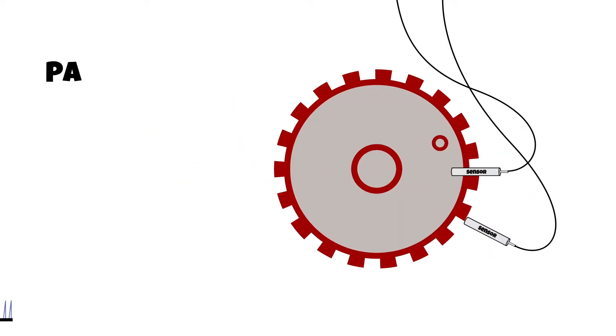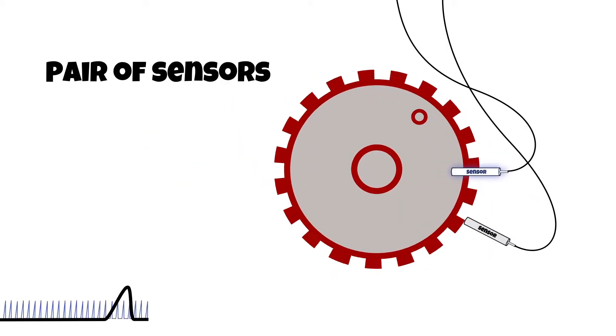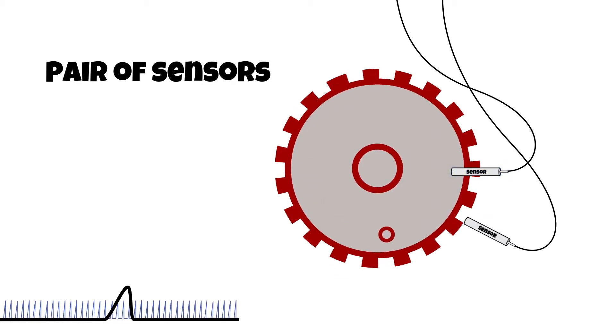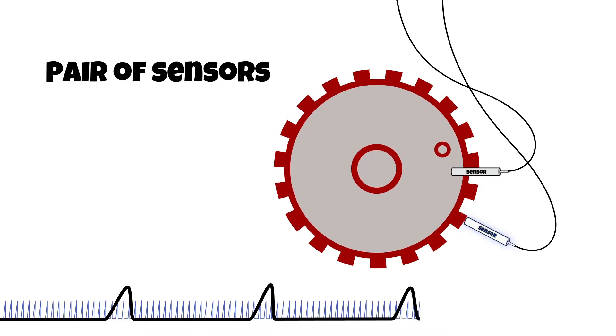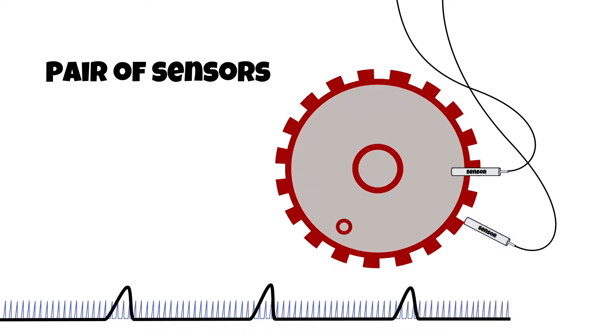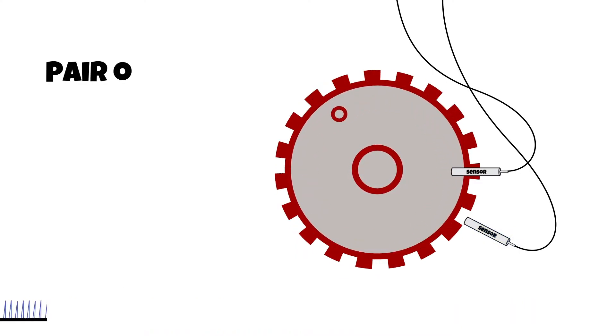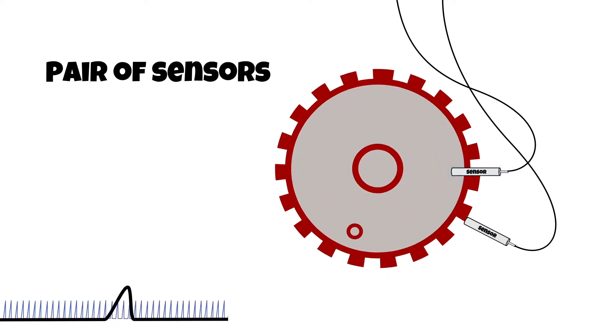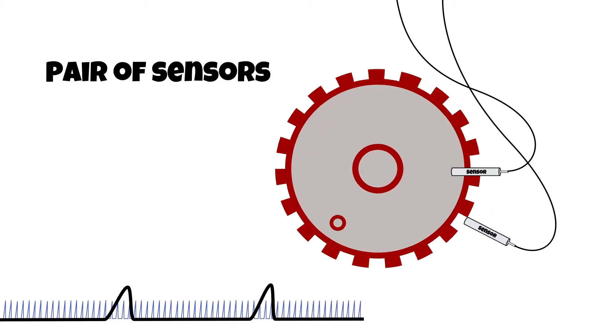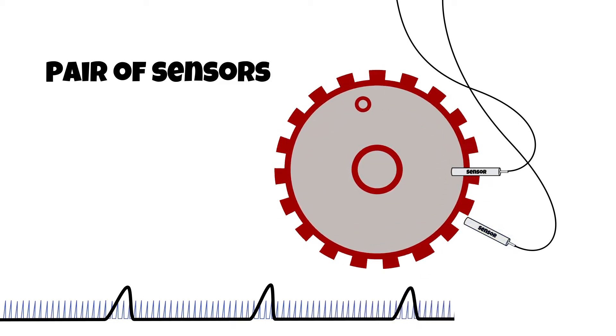One sensor is the same TDC sensor mentioned earlier, picking up one signal per revolution, while the other sensor is detecting the individual teeth from the flywheel. With this, your pre-mid gets many signals per revolution and can convert the changing velocity into the exact angle position.